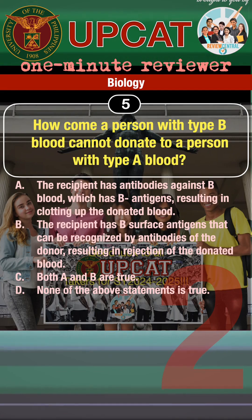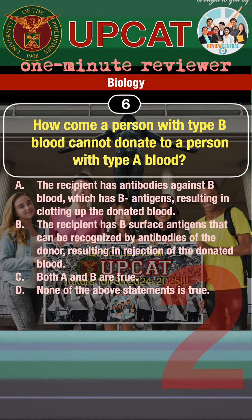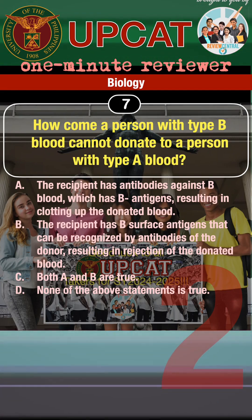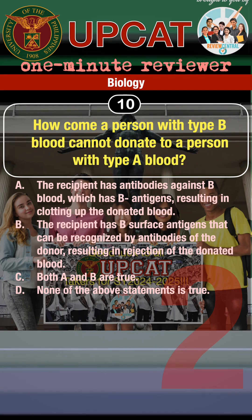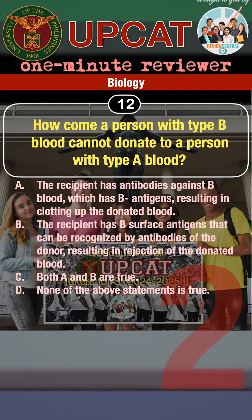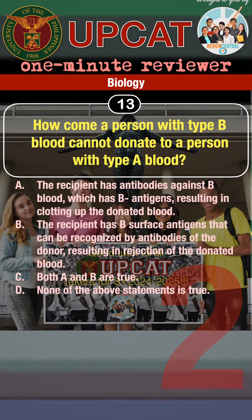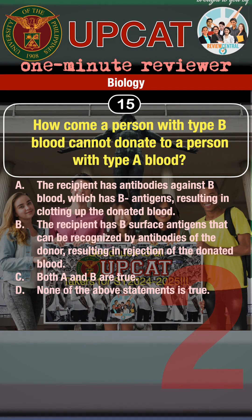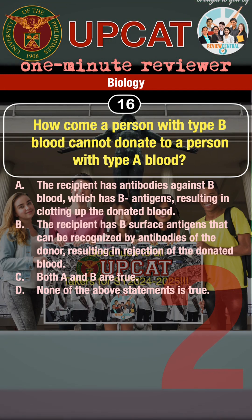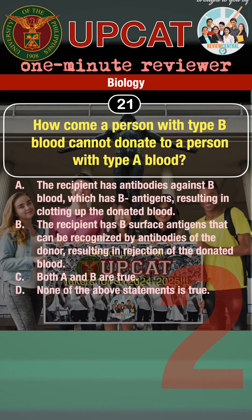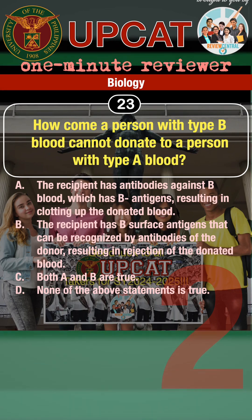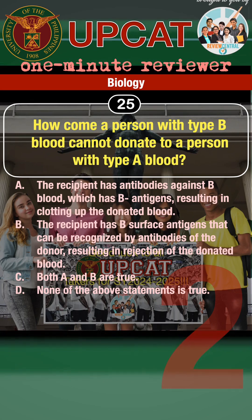How come a person with type B blood cannot donate to a person with type A blood? A. The recipient has antibodies against B blood, which has B antigens, resulting in clotting up the donated blood. B. The recipient has B surface antigens that can be recognized by antibodies of the donor, resulting in rejection of the donated blood. C. Both A and B are true. D. None of the above statements is true.